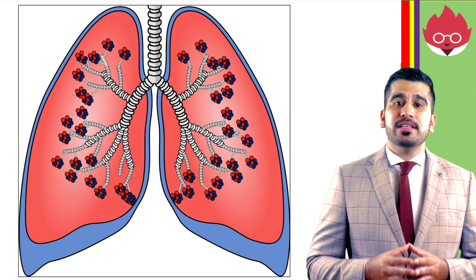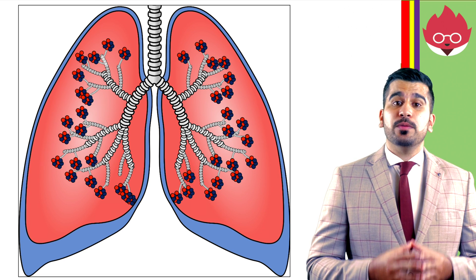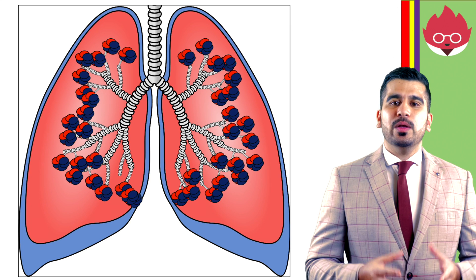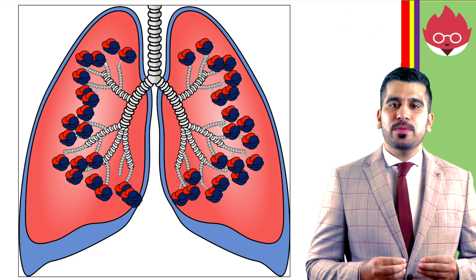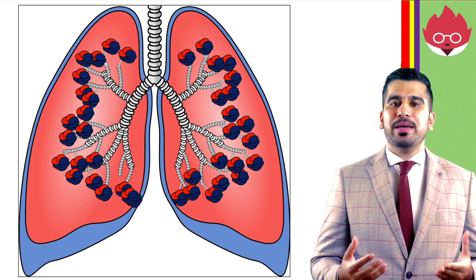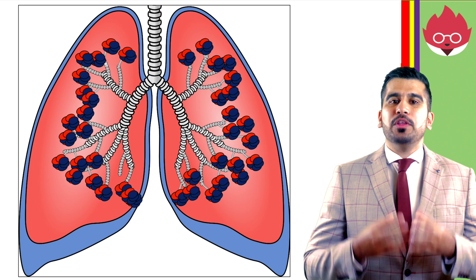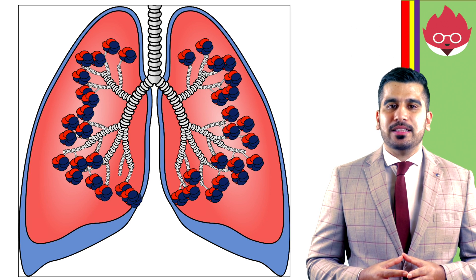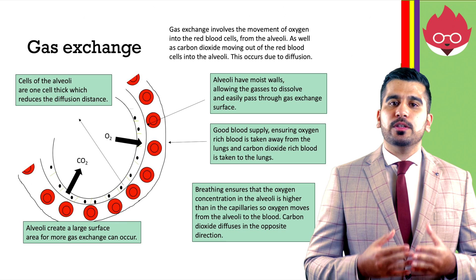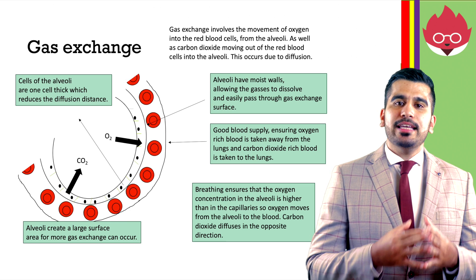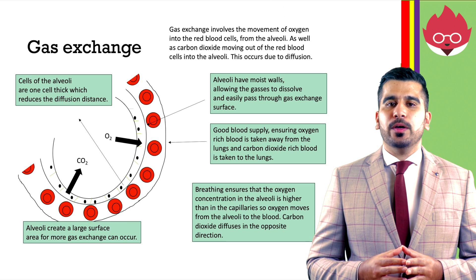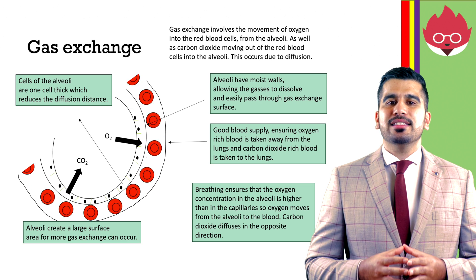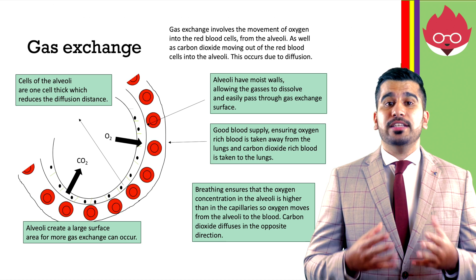In adult humans, the alveoli number can range from 274 to 790 million. Located at the end of the bronchial tubes, when you breathe in, the alveoli expand and take oxygen in. When you breathe out, the alveoli shrink and carbon dioxide is expelled. Gas exchange involves the movement of oxygen into the red blood cells from the alveoli, as well as carbon dioxide moving out of the red blood cells into the alveoli. This occurs via diffusion.